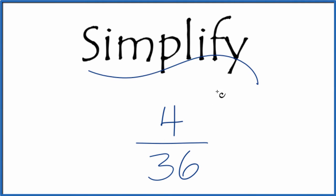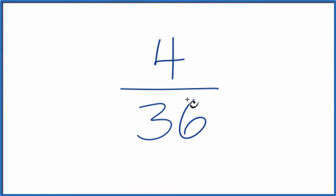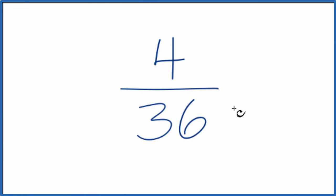Let's simplify the fraction 4 over 36. What we're trying to do is find another fraction that's equal to 4/36 — its equivalent has the same value, but it's in simplest terms. To do that, we find a multiple that goes into both 4 and 36. So if you know 4 times 9 is 36, it's pretty simple.